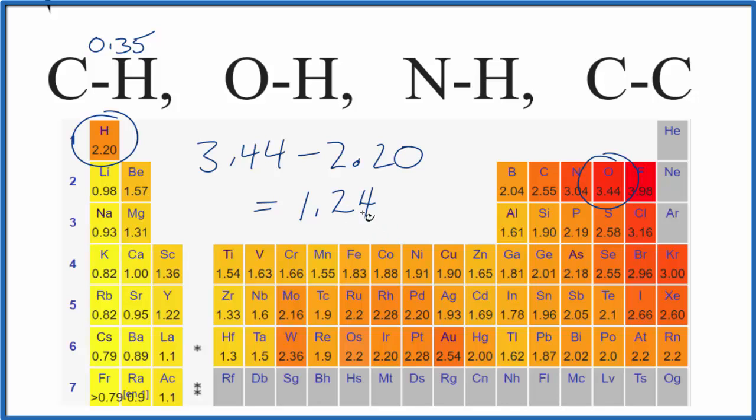So this is going to be polar. When this number is greater than 1.7 or 2, we often consider that to be ionic. So this would be a polar covalent bond.